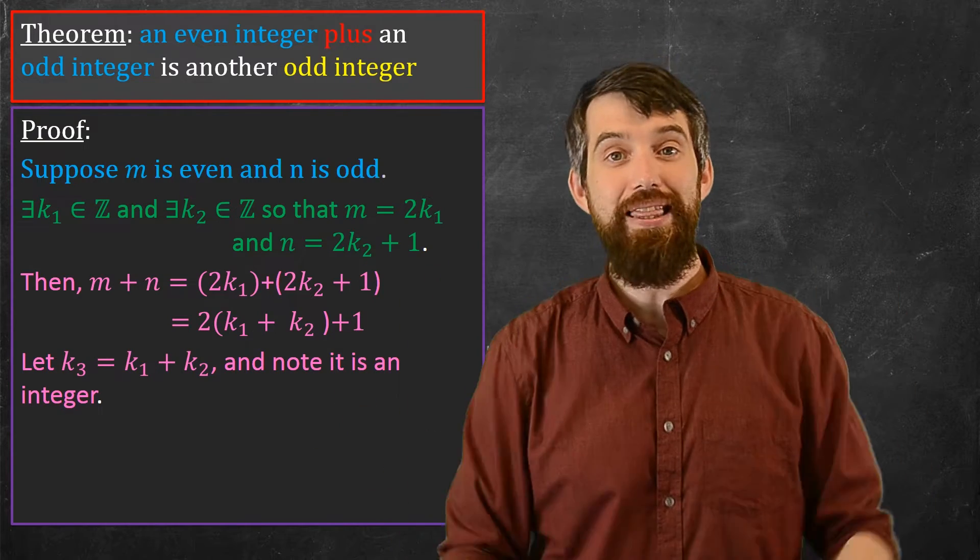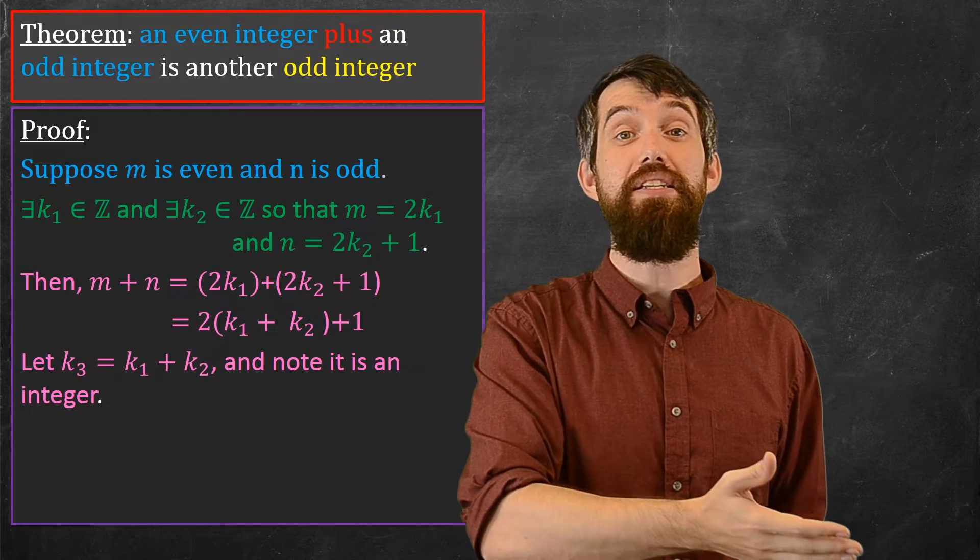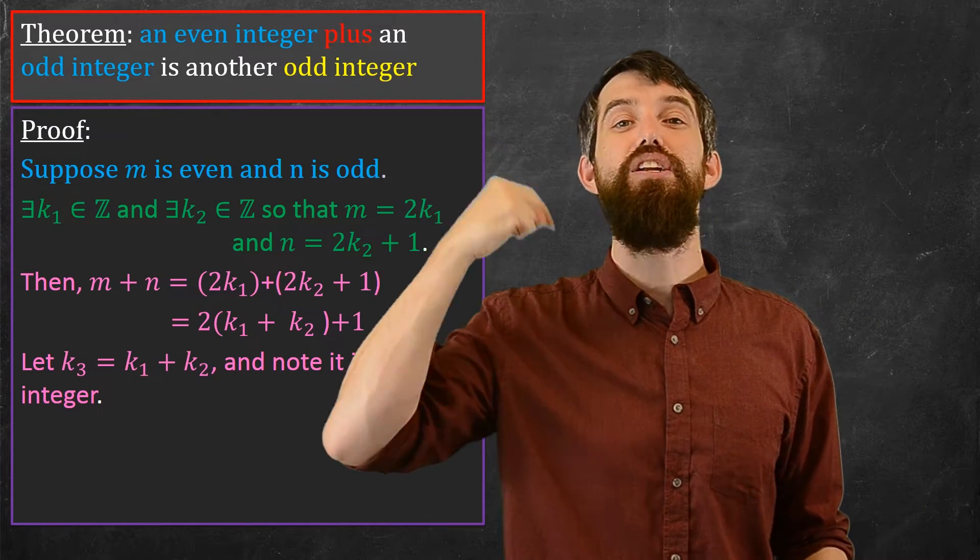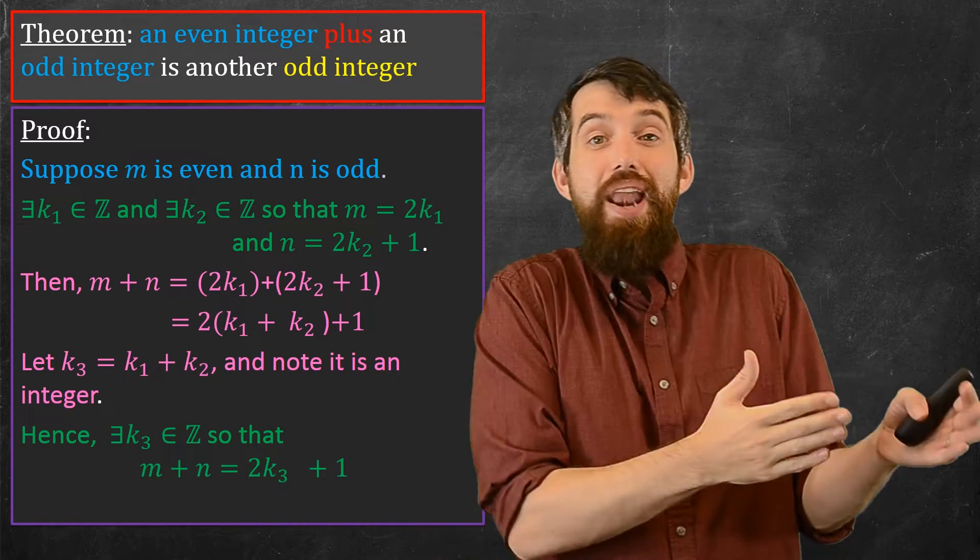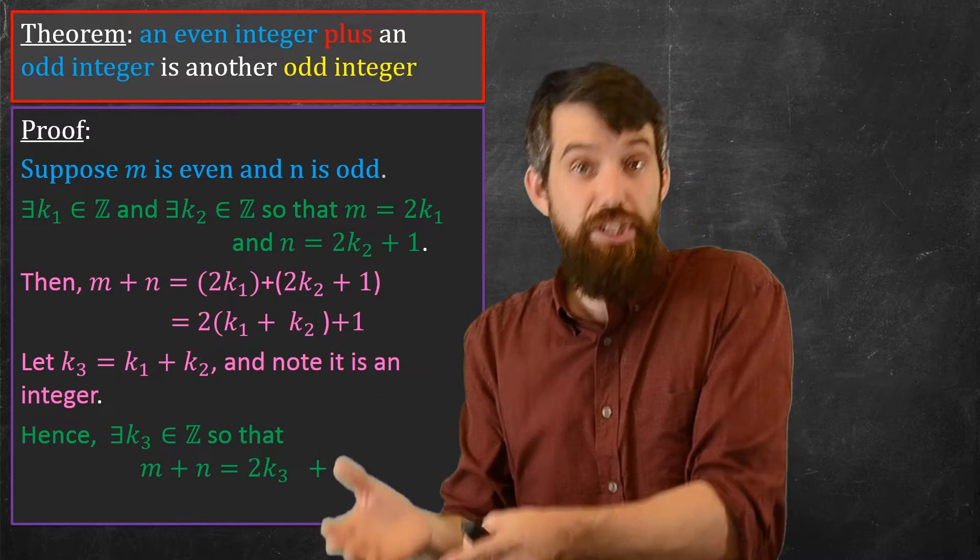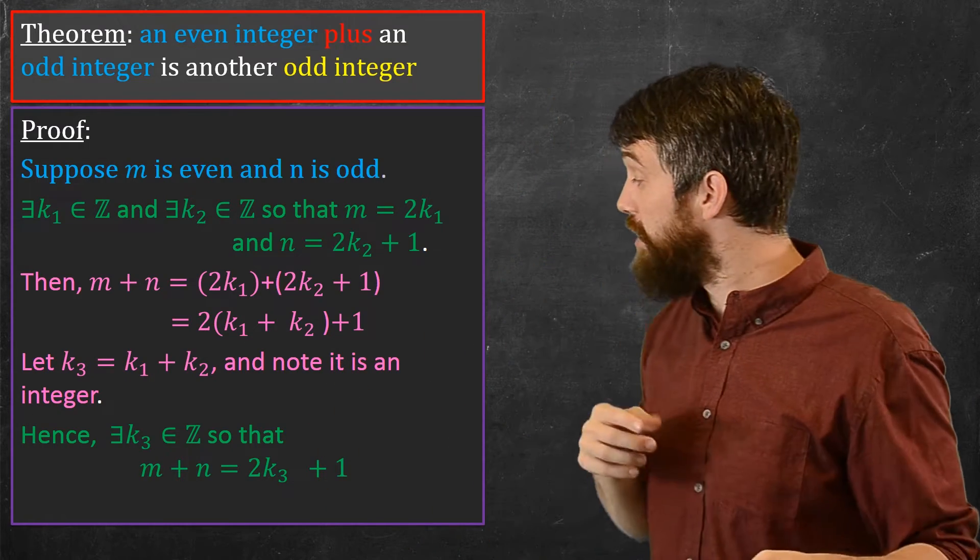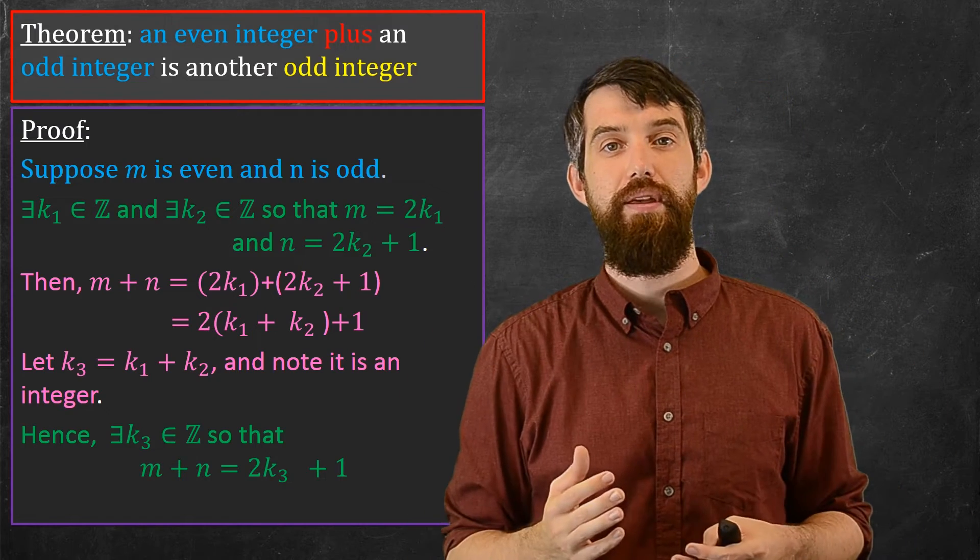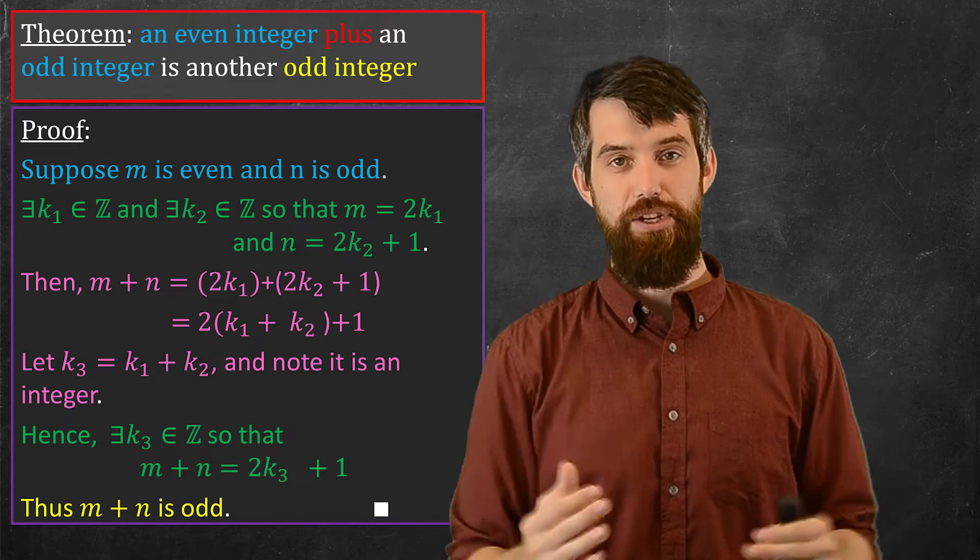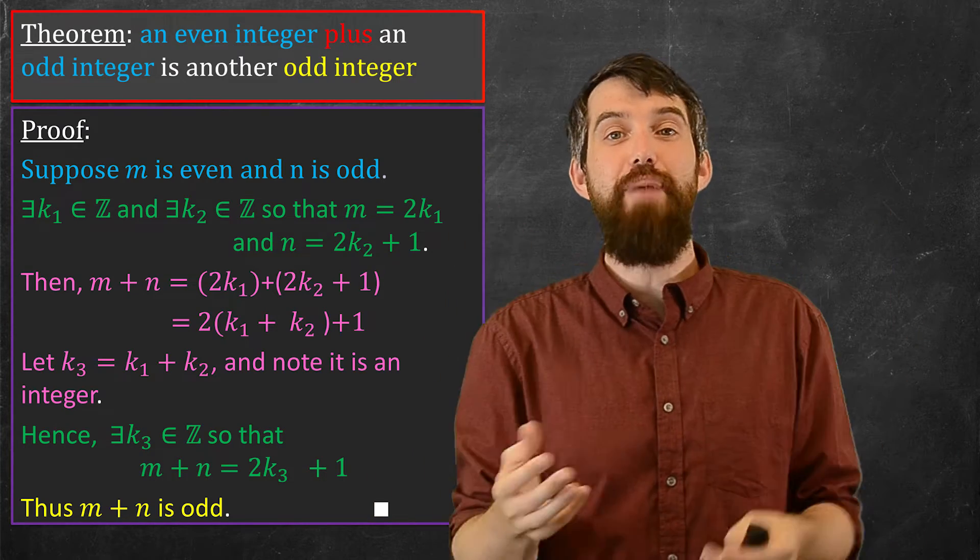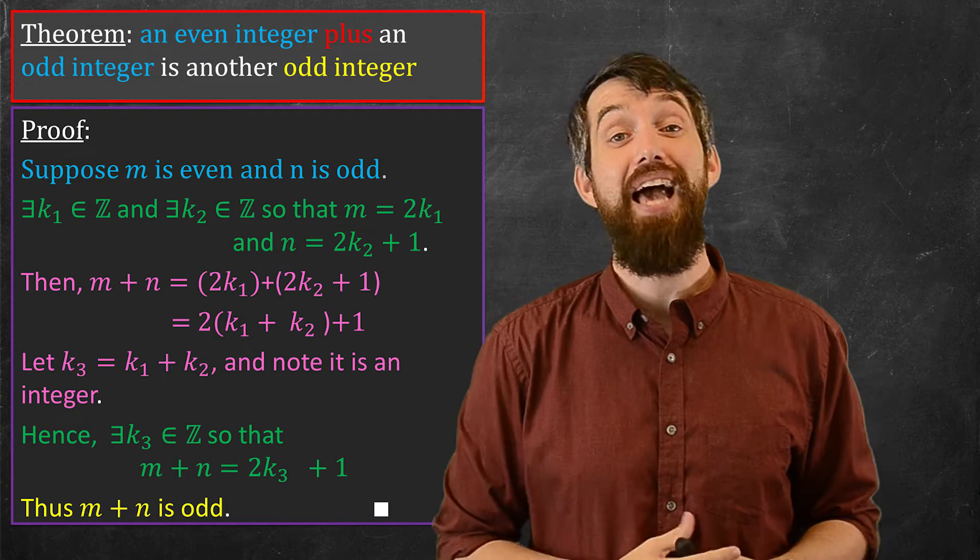Now, why do I like that? Well, what have I done here? I now am in the position to write the definition of the conclusion. That is, I can say that I've got a k3 such that m plus n, the sum of these two things, can be written as twice k3 plus 1. And that's just a different way of saying that m plus n is an odd integer. So that's it. That's the end of my proof, and I can put this little QED box to denote that I'm at the end of my proof.